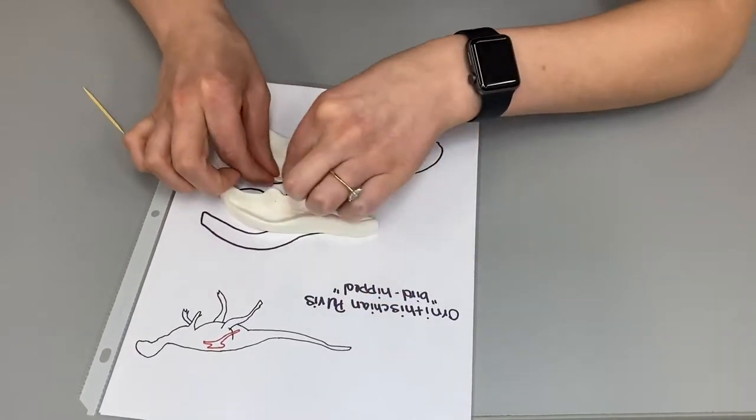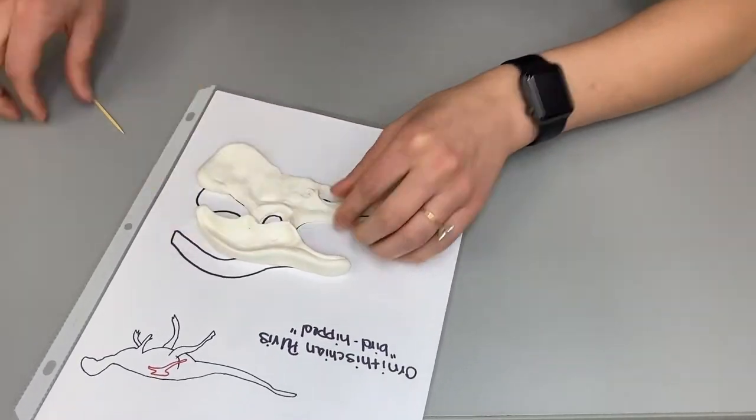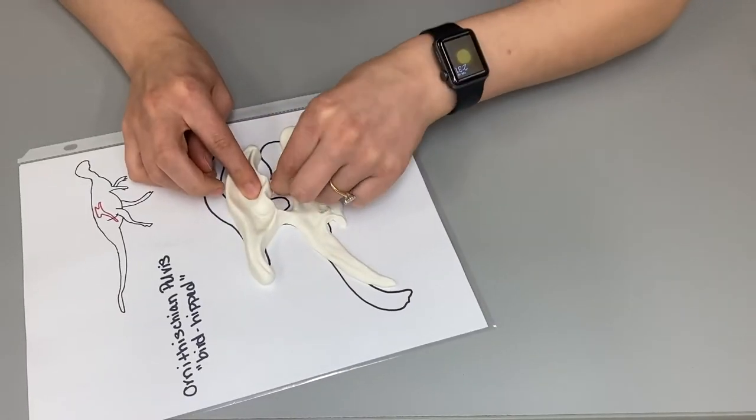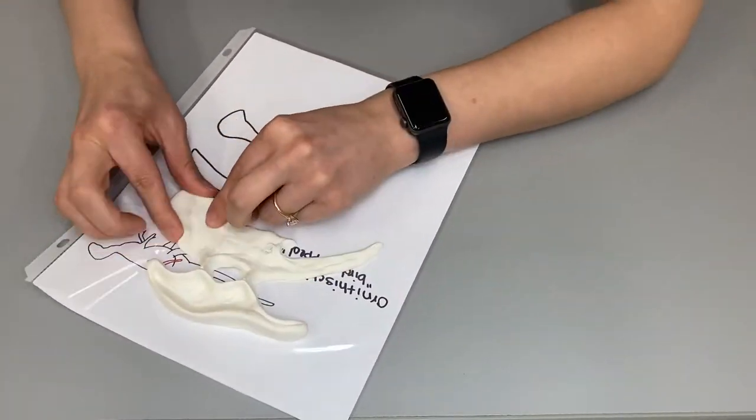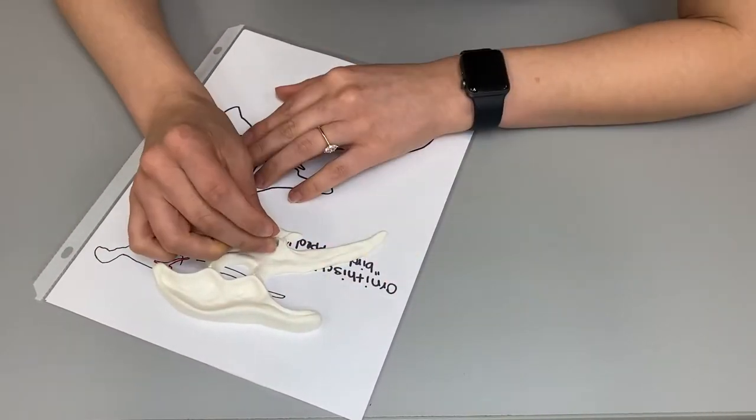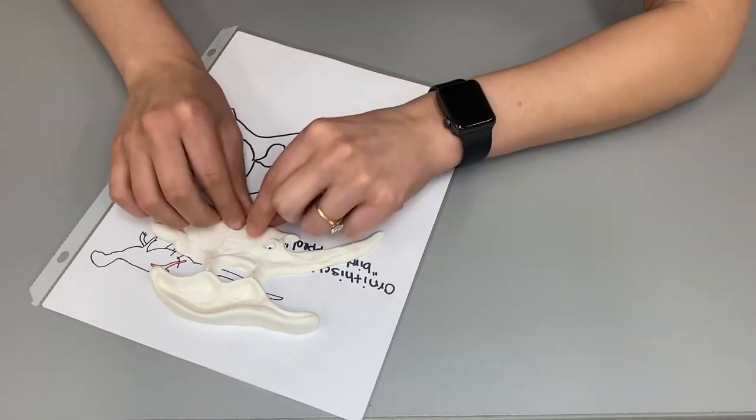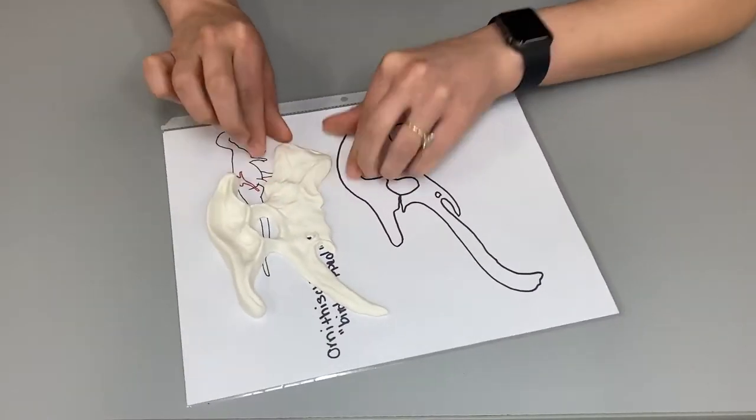Once you are done making the shape that you desire, go ahead and grab the top half of the bone and begin to connect the two pieces together. Pinch the model magic together in the areas that are being connected and if you have any extra you can go ahead and use this to reinforce the areas that are being connected.